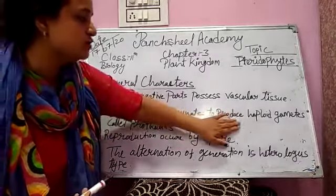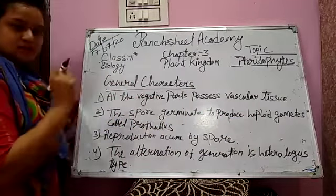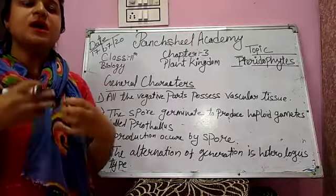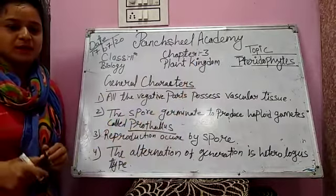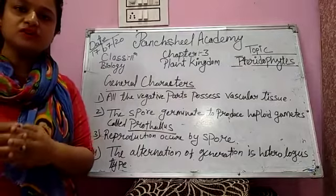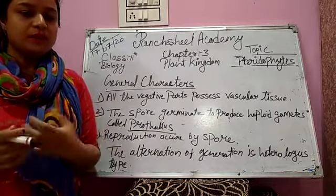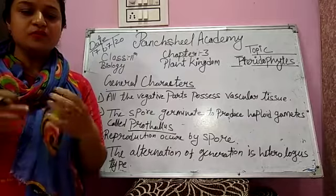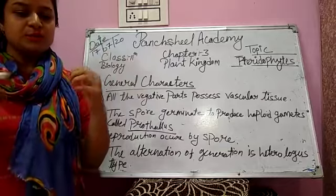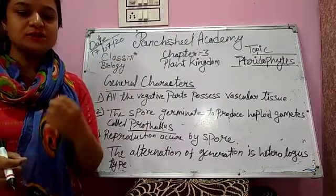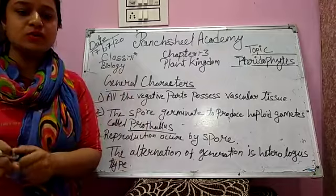The spores germinate to produce haploid gametes called the prothallus. Reproduction occurs via spores. The plants are homosporous, meaning a large number of spores are present and all spores are the same. But in some plants, heterospores are also present — that means the male spore and female spore are different from each other, and that is called heterospory.